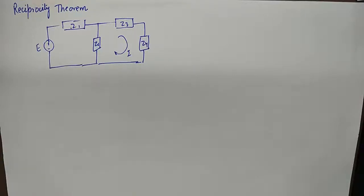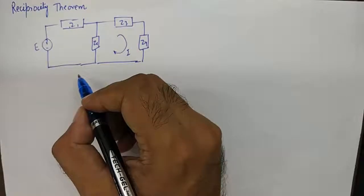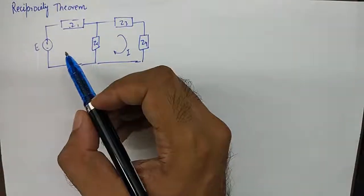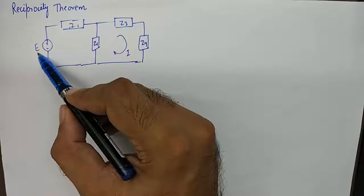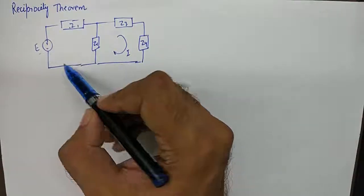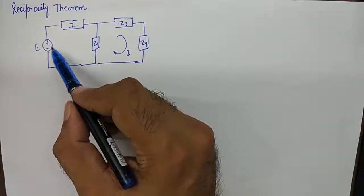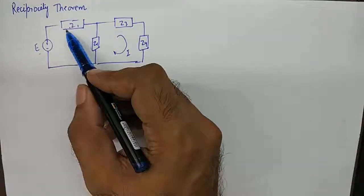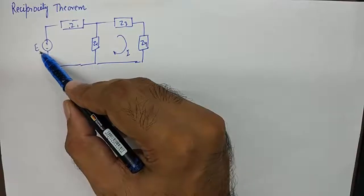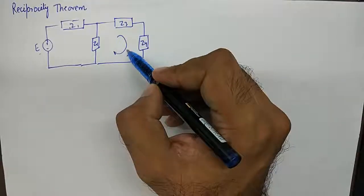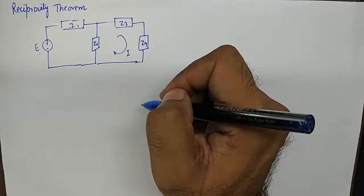So in its simplistic form, I'd like to explain the Reciprocity Theorem using this small network that we have drawn over here. According to the statement that I've just read out, the Reciprocity Theorem says that if you have a network which has some voltage in one loop, over here we have a case where the voltage E is present in the first loop or the left loop, and because of this voltage here there is some current in the second loop which is represented by I.